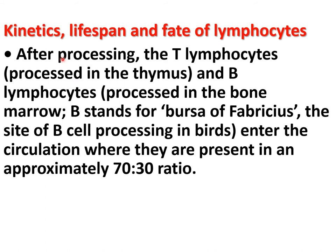Regarding the kinetics, lifespan, and fate of lymphocytes: T lymphocytes originate from bone marrow but are processed in the thymus. B lymphocytes are processed in the bone marrow — where 'B' stands for bursa of Fabricius. After processing, they enter the circulation where T and B lymphocytes are present in approximately a 70 to 30 ratio.